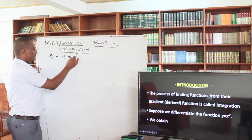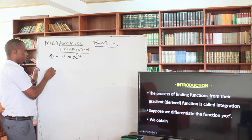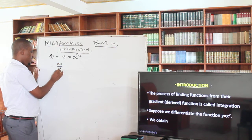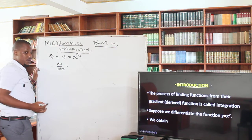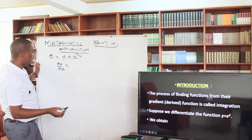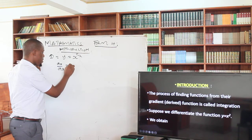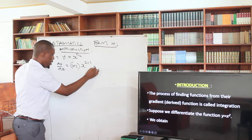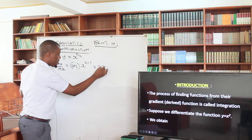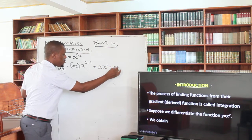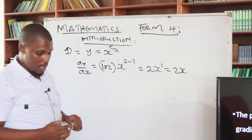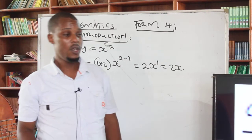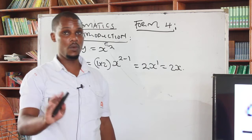Suppose we differentiate the function. I give you y equals x squared, and I tell you to differentiate this function. You get dy/dx. On the normal way, you lower the power — the power here is 2, so 2 times 1 gives 2, then x to the power 2 minus 1, giving 2x to the power 1, which is 2x.